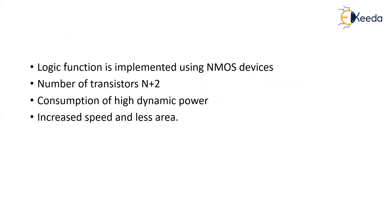The logic function in dynamic CMOS uses only NMOS devices in the pull-down network — the other two transistors are clocked MOSFETs. If the number of inputs is N, we need N transistors plus two additional MOSFETs for the clock signals, giving N+2 total. The disadvantage is high dynamic power consumption, but the advantages are increased speed and very compact area since fewer transistors are used.